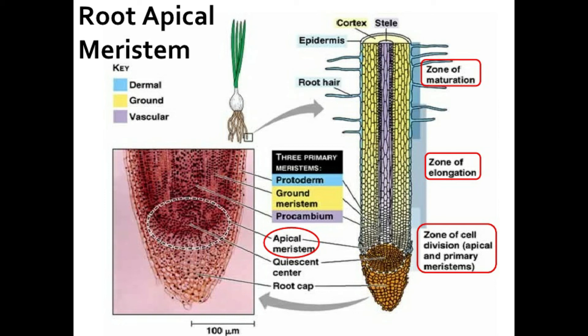Intercalary meristems are parts of the apical meristems which get separated from the apex by permanent tissues. These are situated at the base of internodes. In many plants, they play an important role in the production of flower leaves. These are of a temporary nature.